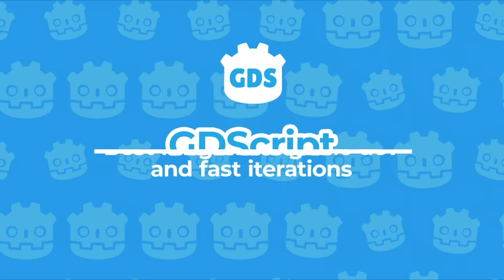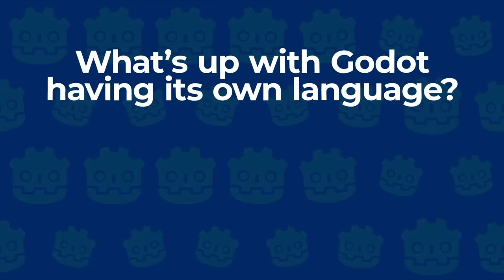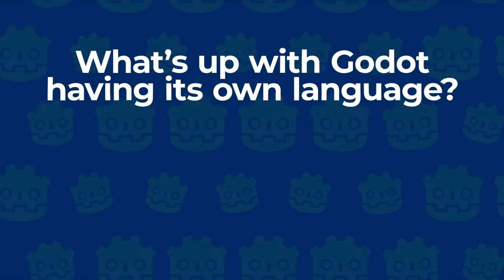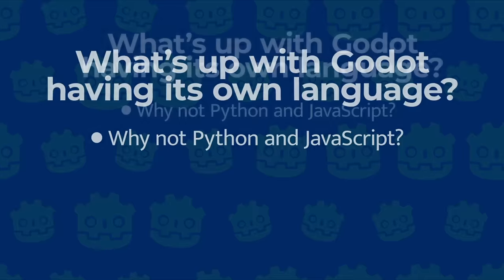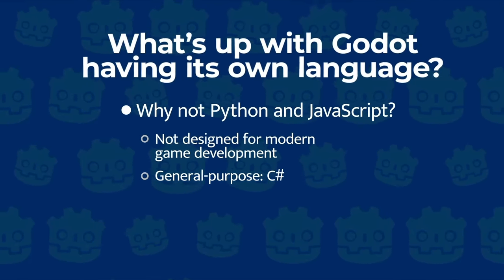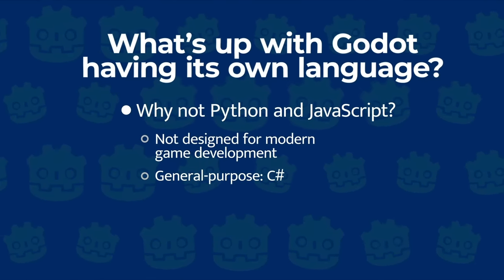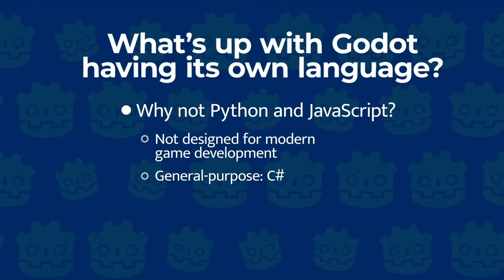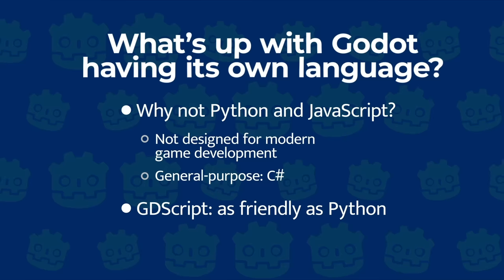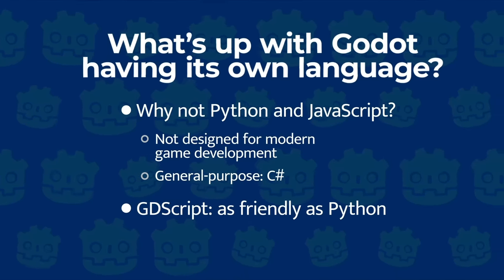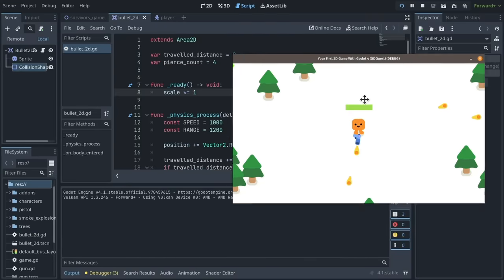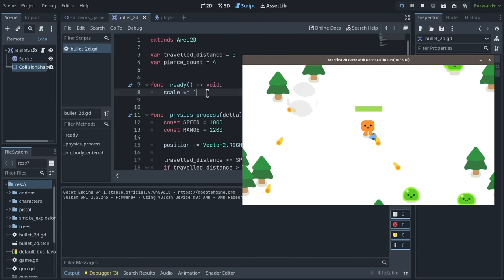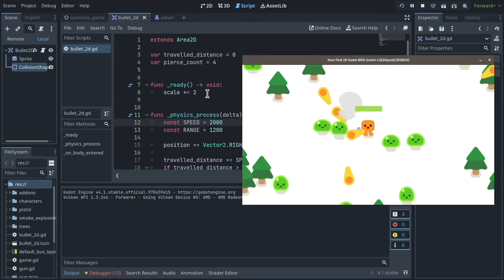First things first, let's talk about the elephant in the room. What's up with Godot having its own language? What is the point when there are perfectly good popular languages out there like Python or JavaScript? General purpose languages are just not designed for modern game development. Languages like Python and JavaScript have poor multi-threading and memory models for games. GDScript was built to have something as friendly as Python, but with reference-counted memory management, which leads to more stable performance. It's tightly integrated with Godot's built-in script editor, so you can directly script in Godot. It's also an interpreted language, so it has virtually no compile times, and you can reload code at runtime.